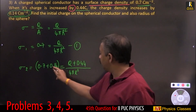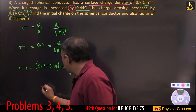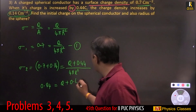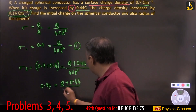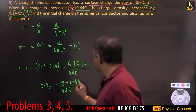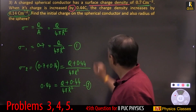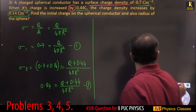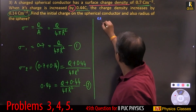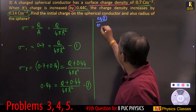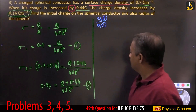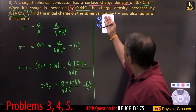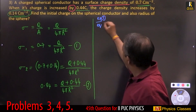Equation 2: 0.84 equals Q plus 0.44 divided by 4 pi r squared. Now just divide one equation by the other and simplify. Let us take equation 1 divided by equation 2.